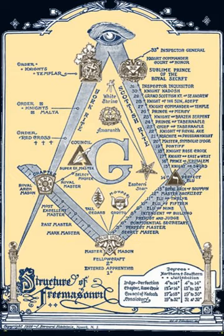The Order of Mark Master Masons: under the English Constitution this degree is only conferred in Mark Mason's Lodges, which are independent from the United Grand Lodge of England and administrated from Mark Mason's Hall, London. Within the Order, members may also join the Royal Arch Mariners. The Order of the Secret Monitor: under the English Constitution, the Order meets in conclaves, each with a Supreme Ruler at its head. The Order is administrated from Mark Mason's Hall, London. Within the Order, members may also join the Order of the Scarlet Cord.